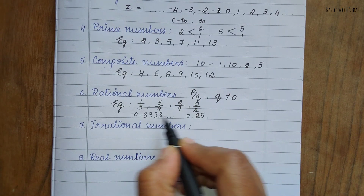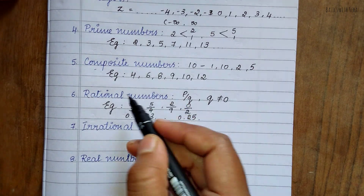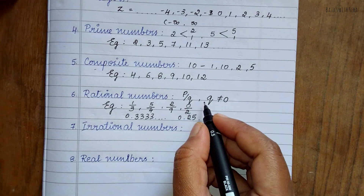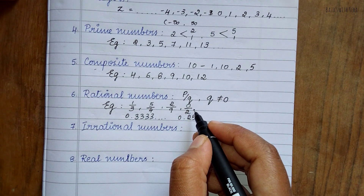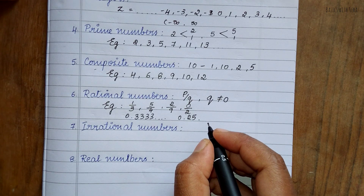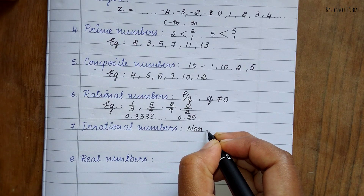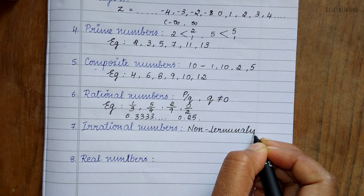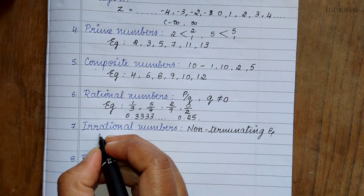Irrational numbers are the opposite of rational numbers. They cannot be expressed in the form of P by Q, and they are non-terminating and non-repeating.